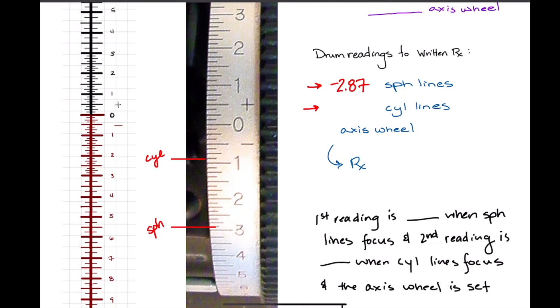And then what power reading did we get for the cylinder when the cylinder was focused? Minus 0.87. If you're still struggling with remembering those dioptric increments, really seriously, get those into your memory bank because that will make this process a lot easier.